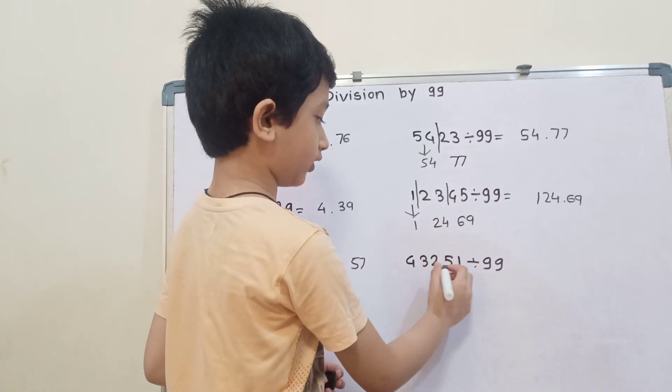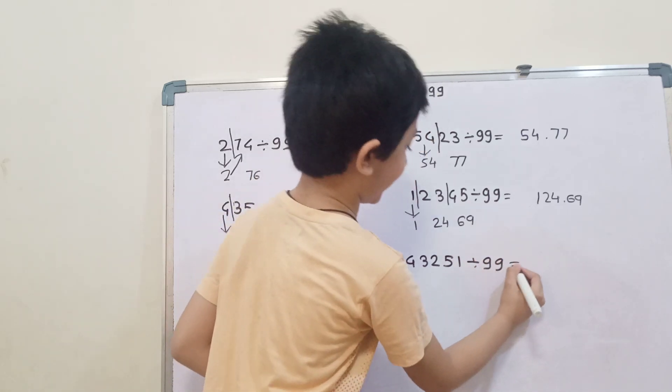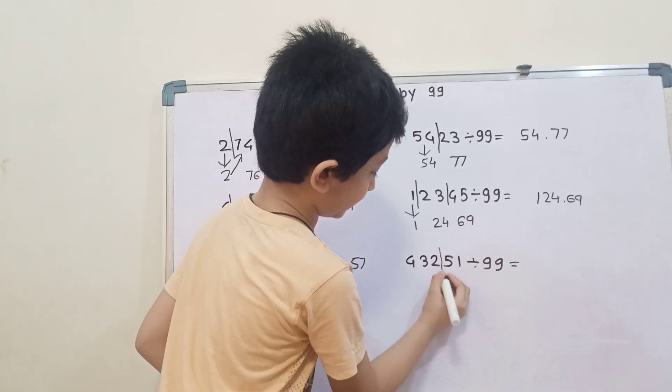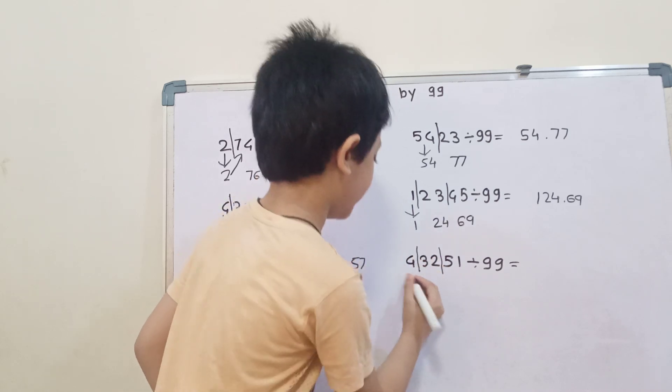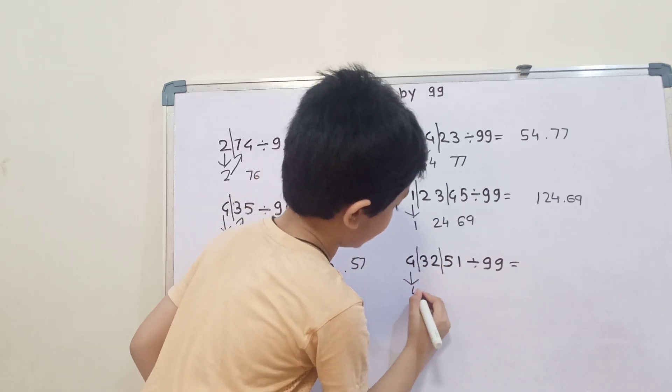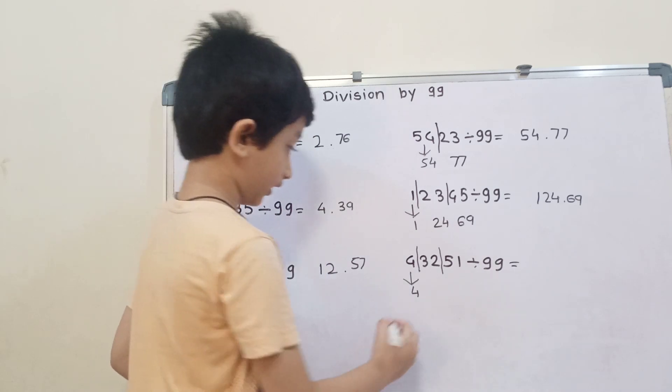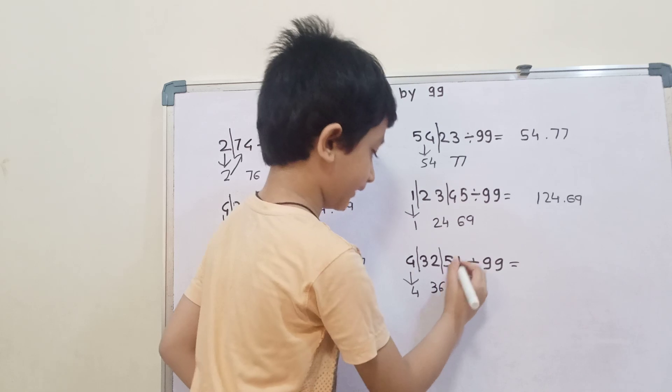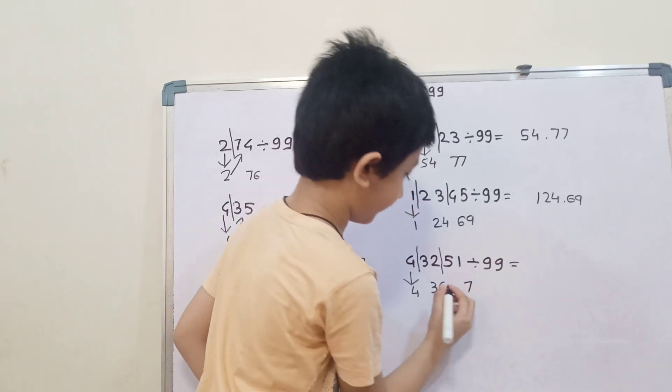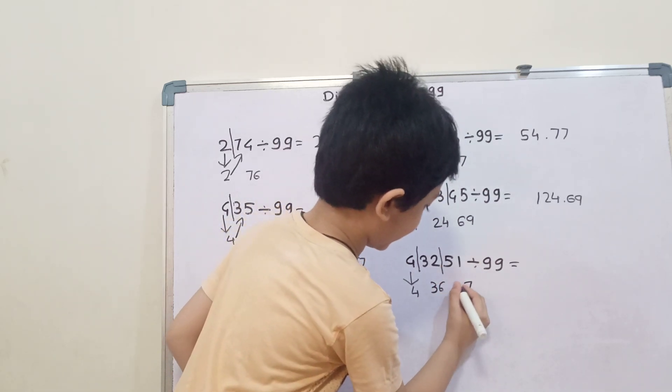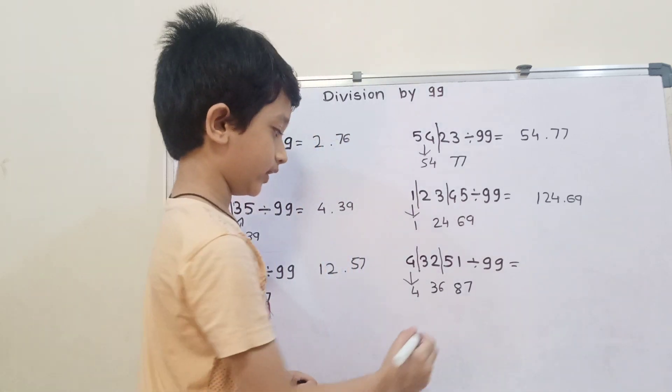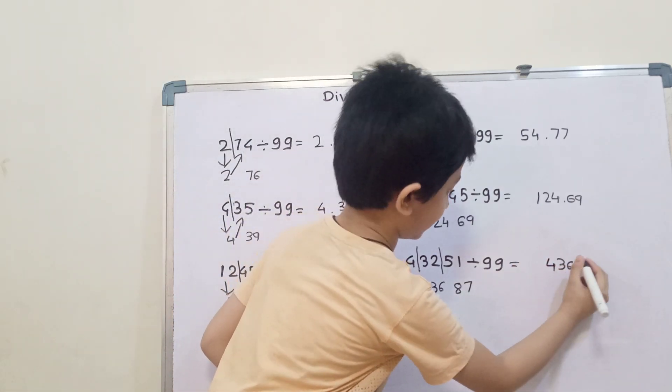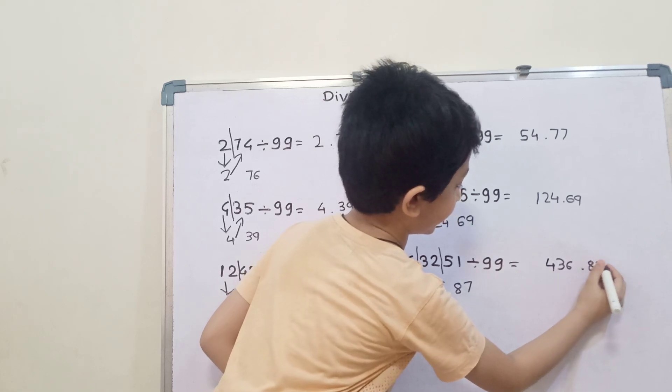Then 43251 divided by 99. First, divide into 2-digit parts. Write 4 as it is, then 32 plus 4 is 36, and then 51 plus 36: 1 plus 6 is 7, and 5 plus 3 is 8. So the answer is 436.87.